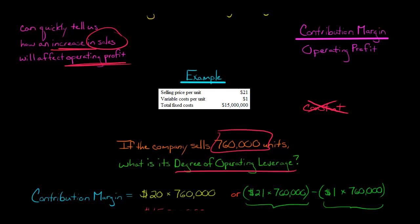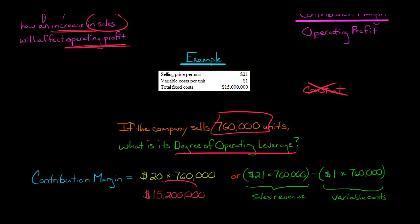One is you could just take the unit contribution margin, which is $21 minus $1. So that's $20 of contribution margin every time a unit is sold. And multiply that by the number of units sold, which is 760,000. And that will give you $15.2 million.